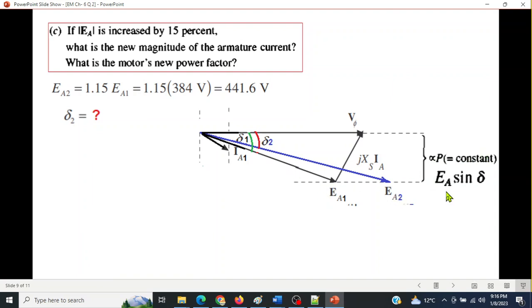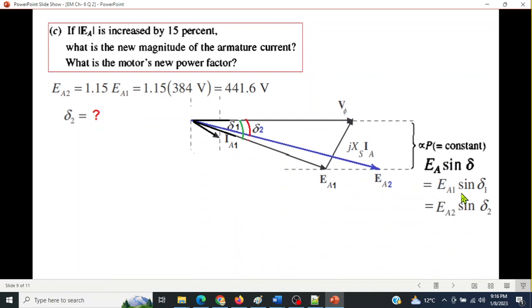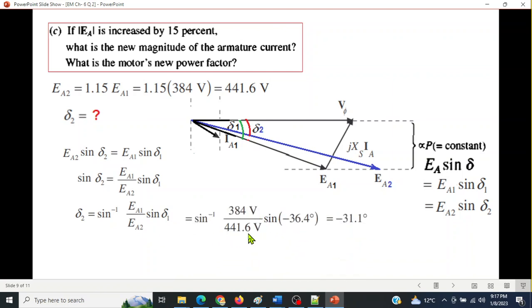Now, this was, as I was mentioning, this is dependent on the power, which is constant. And in the first case, or in any case, this value is Ea sine delta. And for these two cases, it will be like Ea1 sine delta 1. And for the Ea2, it will be Ea2 sine delta 2. So equating these two, we can find delta 2. This equating sine delta 2, therefore delta 2 is given by this formula. Now we know all these values. So we'll plug in the values, 384, 441, and sine of minus 36.4. So delta 2 will be minus 31.1 degrees. So you can see it is going further towards the positive side.